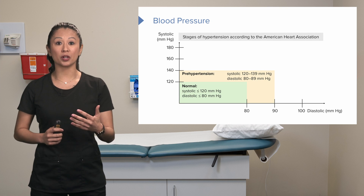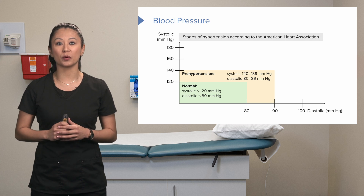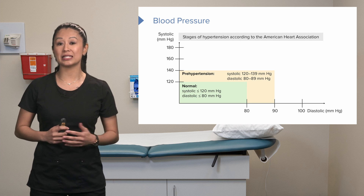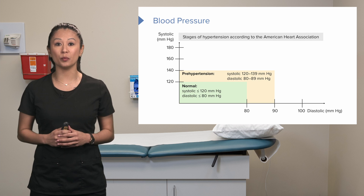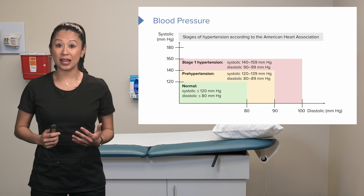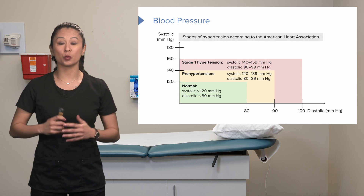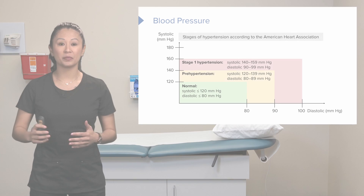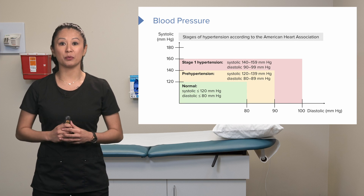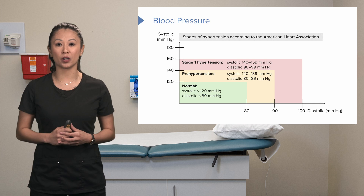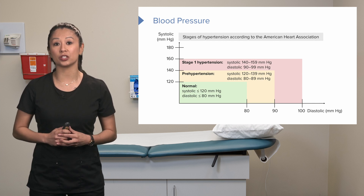Prehypertension is an important number to note. Moving out of the 120 over 80 range, we start looking at modifiable risk factors — such as watching salt intake and diet — to lower blood pressure. Stage 1 hypertension is classified as systolic 140 and diastolic 90 and above. This becomes a cause of concern because it can start affecting the structures of the heart, and this is where medications may be integrated.